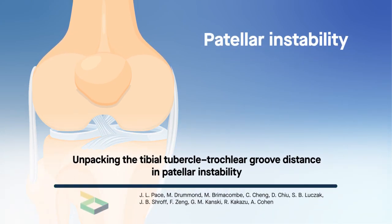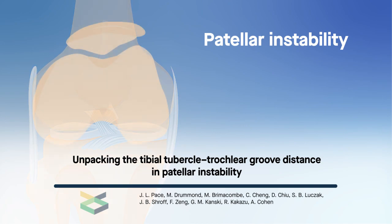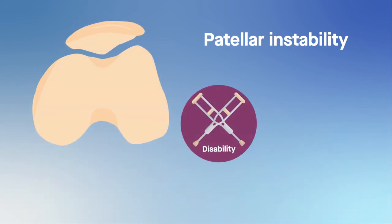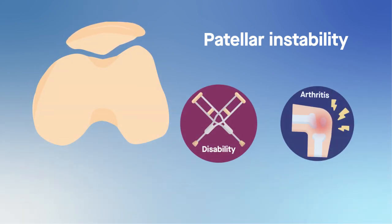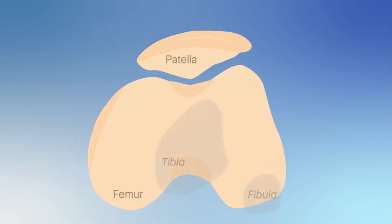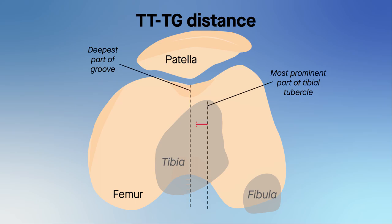Patellar instability is a condition that primarily affects young patients. A chronically unstable kneecap can predispose patients to disability and early arthritis. One measure used to gauge the risk of patellar instability is the TT-TG distance — that's the distance from the tibial tubercle to the trochlear groove.